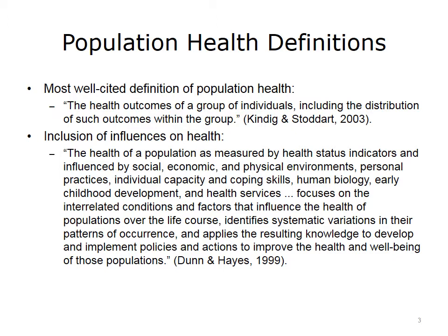In addition, there are definitions that are more specific. Dunn and Hayes' definition in their Canadian Journal of Population Health article, "Toward a Lexicon of Population Health," includes influences on health as part of the population: "The health of a population, as measured by health status indicators, and influenced by social, economic, and physical environments, personal practices, individual capacity and coping skills, human biology, early childhood development, and health services, focuses on the interrelated conditions and factors that influence the health of populations over the life course, identifies systematic variations in their patterns of occurrence, and applies the resulting knowledge to develop and implement policies and actions to improve the health and well-being of those populations."